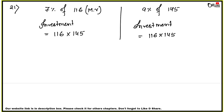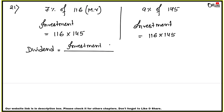Now, first case — we have dividend here. Dividend means income. So first we use the dividend formula. The formula is: annual income = investment × rate divided by MV. Here, investment is 116 × 145, rate is 7, and MV is 116.